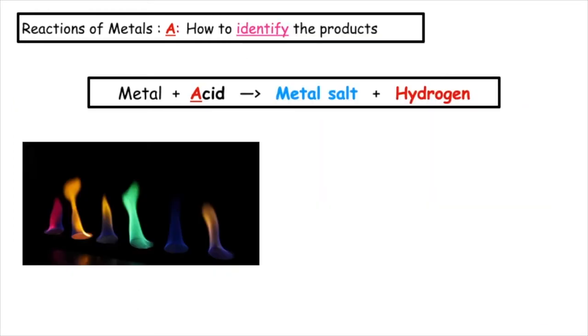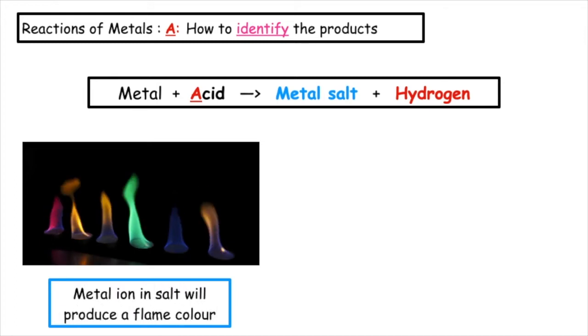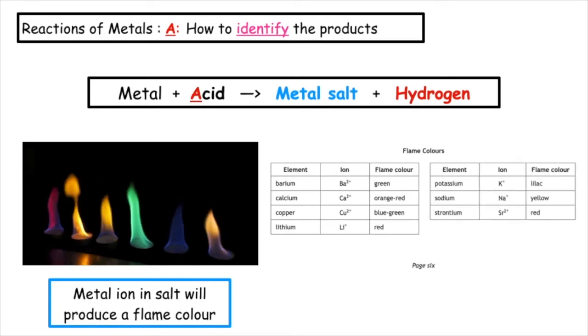So how do we identify the products produced? For the metal salt, the metal ion in the salt will produce a flame color. We can use page 6 of our data booklet to identify the metal ion and the flame color produced.